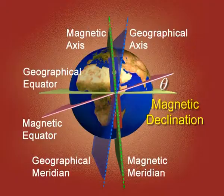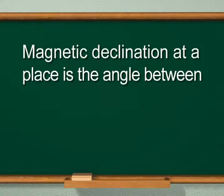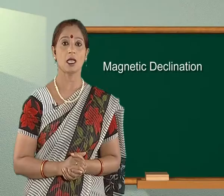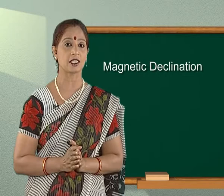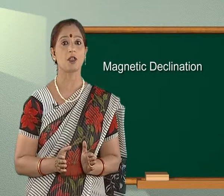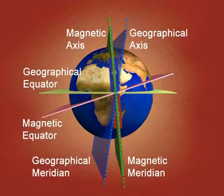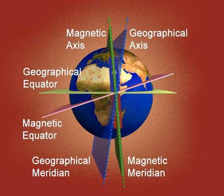It can also be defined as: magnetic declination at a place is the angle between the magnetic meridian and geographic meridian at that place. Magnetic declination arises because the axis of the fictitious bar magnet responsible for Earth's magnetism does not coincide with the axis of rotation of Earth. In fact, the imaginary magnet lies at an angle of about 11.3 degrees west of the polar axis or the geographic axis.